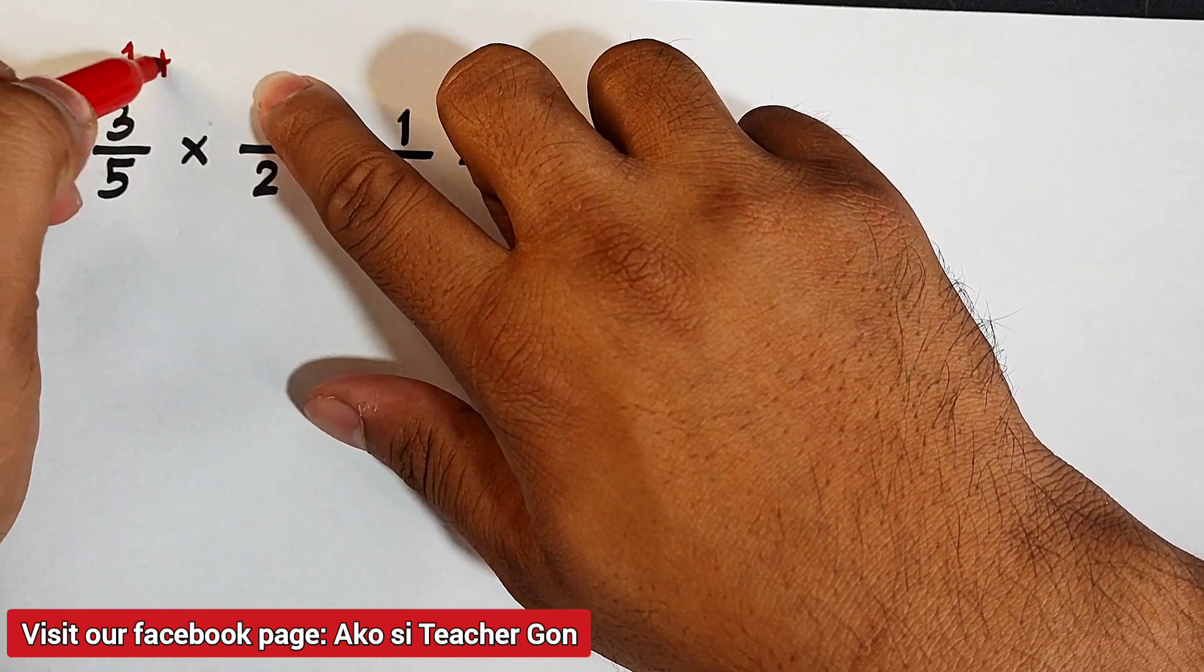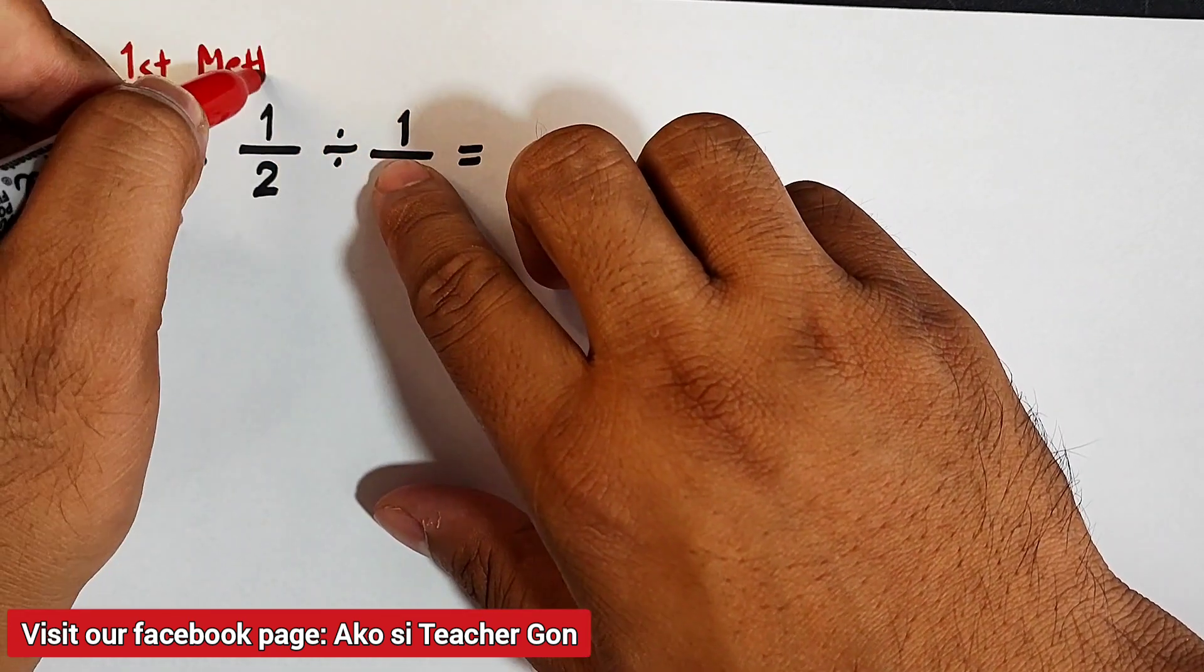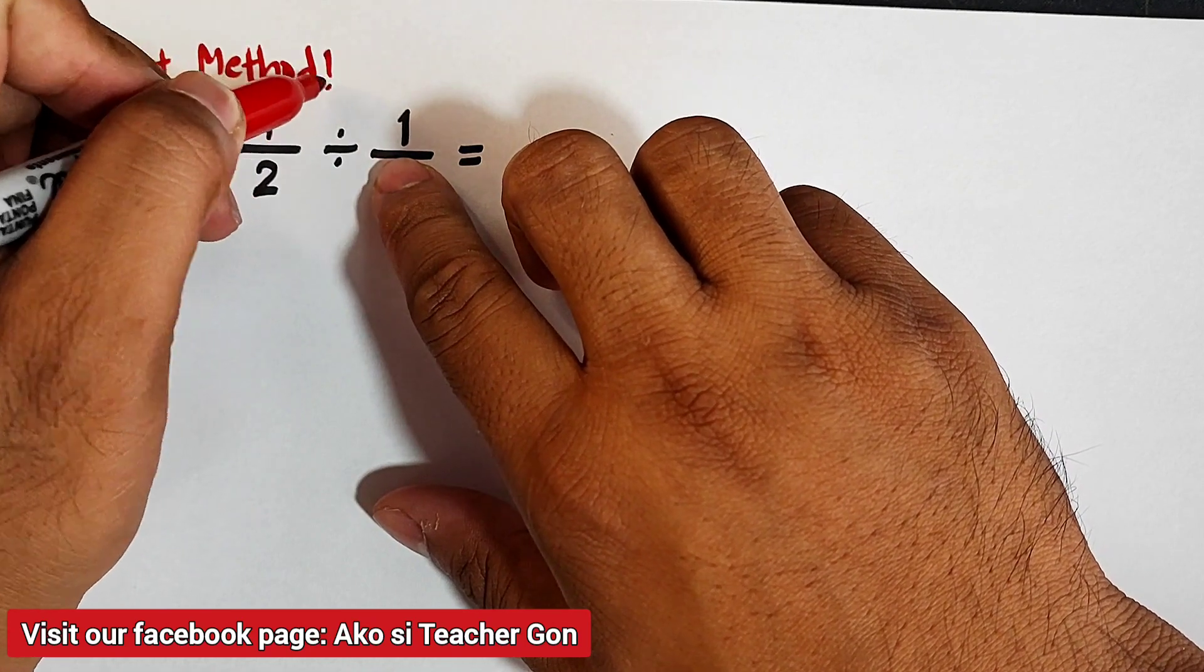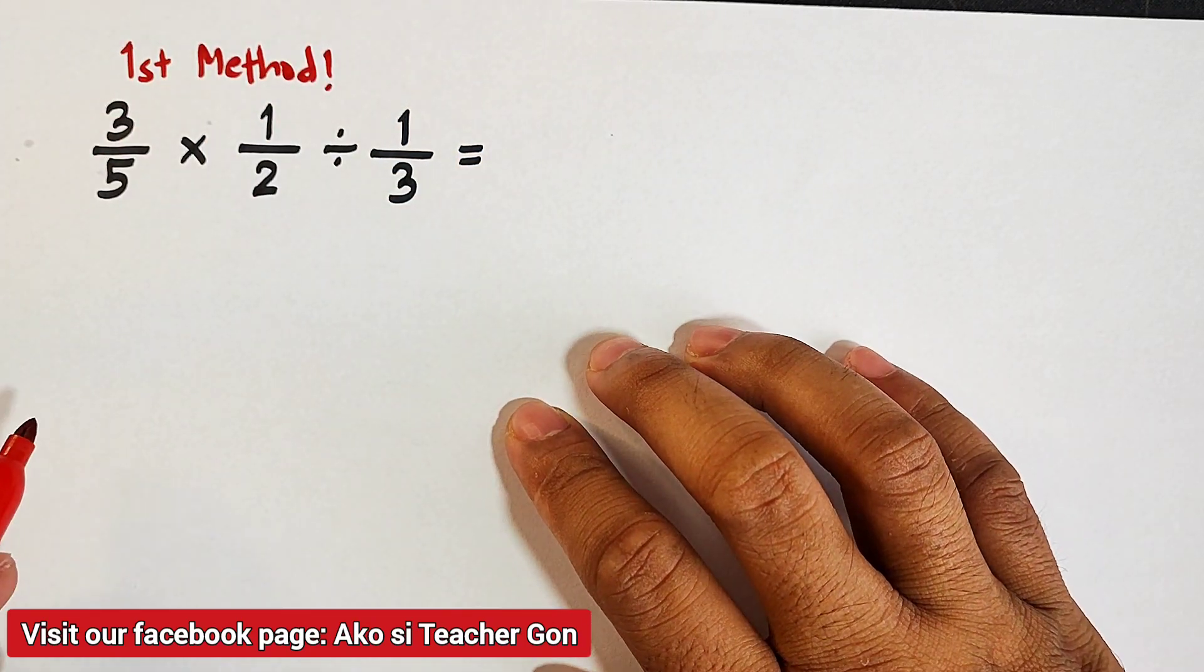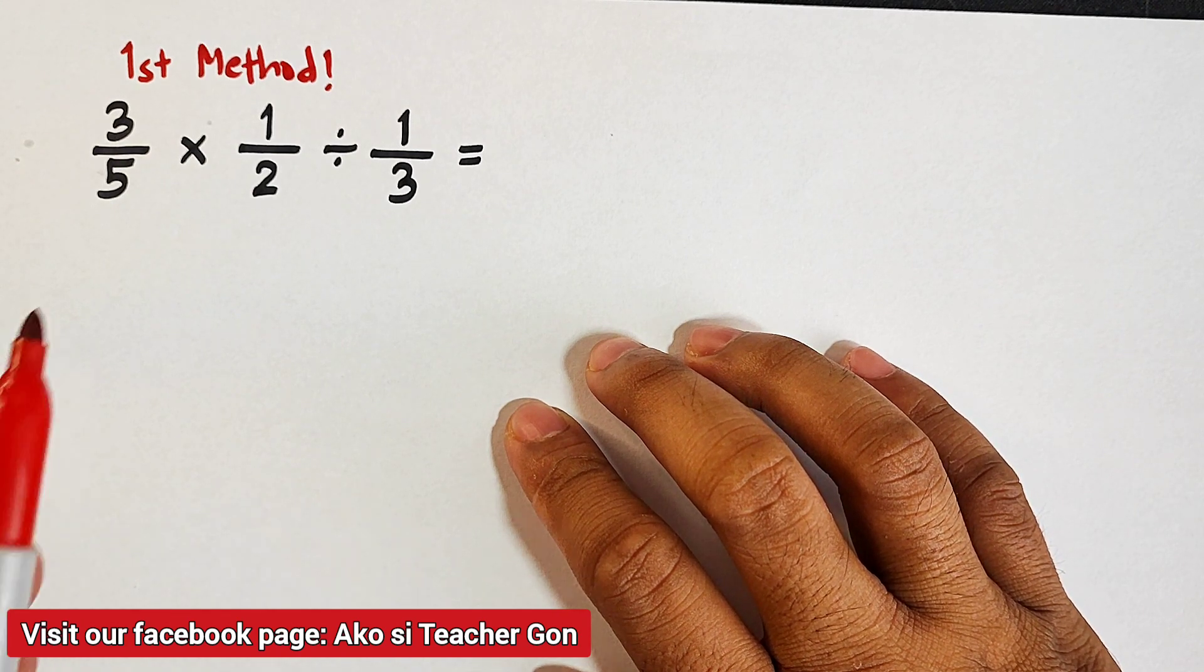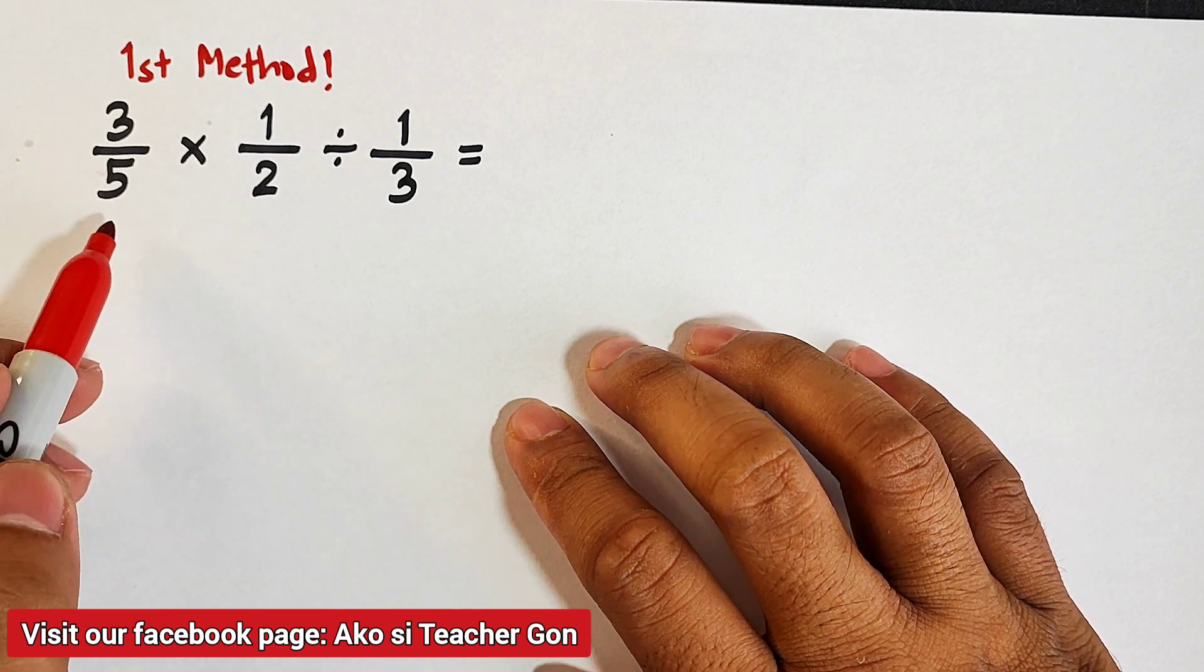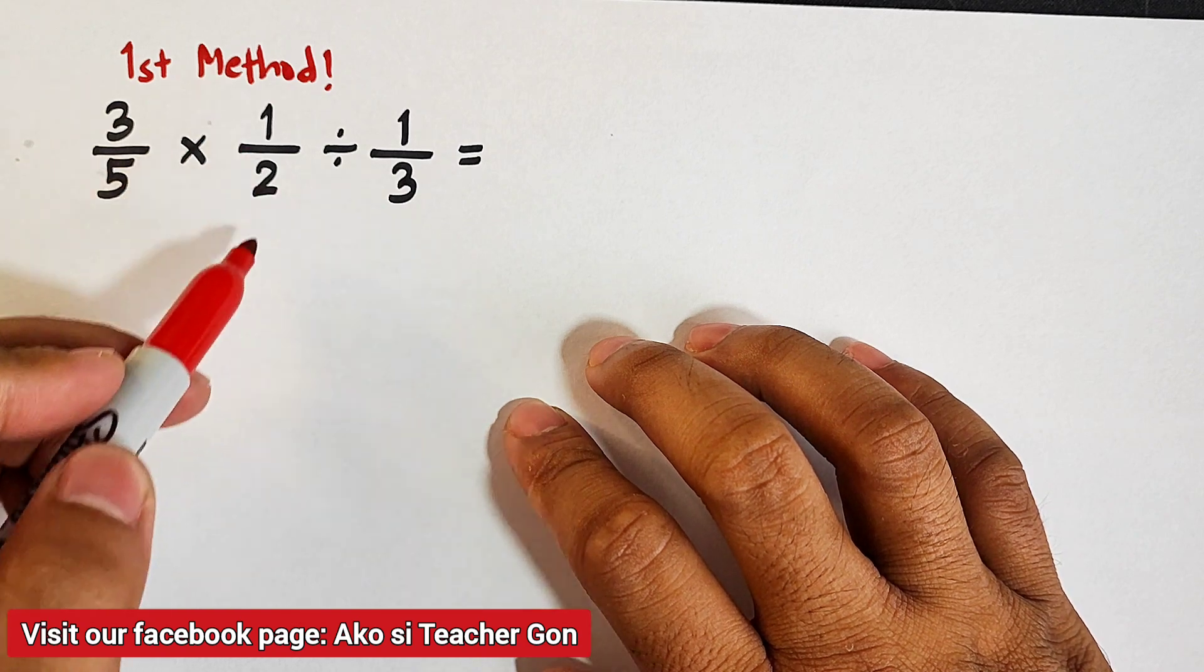One is the proper way. First method is the proper way, while the second one is the shorter method. So basically, which one comes first? We need to multiply the fractions 3 over 5 and one-half. So we will multiply 3 times 1, that is 3.